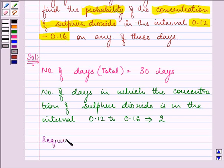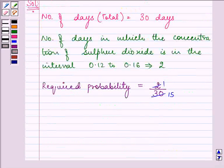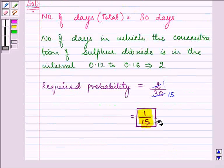The required probability is equal to 2 out of these 30 days which can be written as 1 over 15 and this is our required answer to this question.